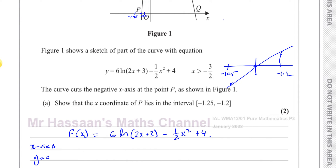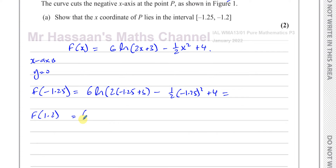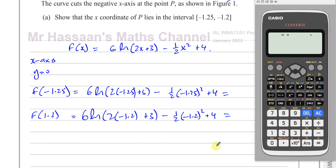And when I put -1.2 into the function — 6 times ln(2 times -1.2 + 3) minus 1.5 times (-1.2) squared plus 4 — let's see what happens.